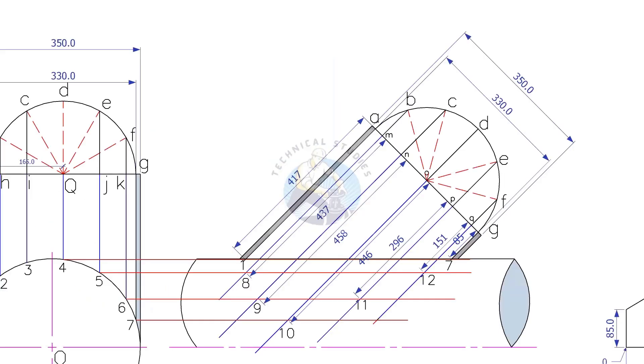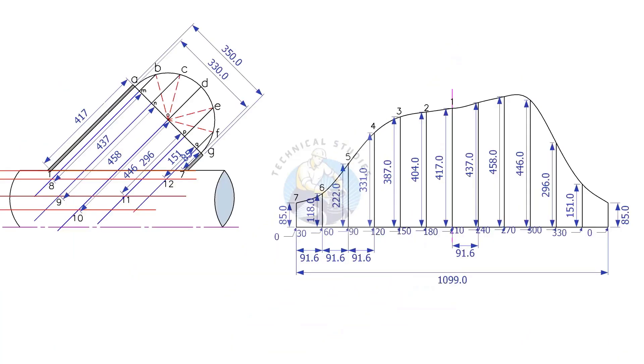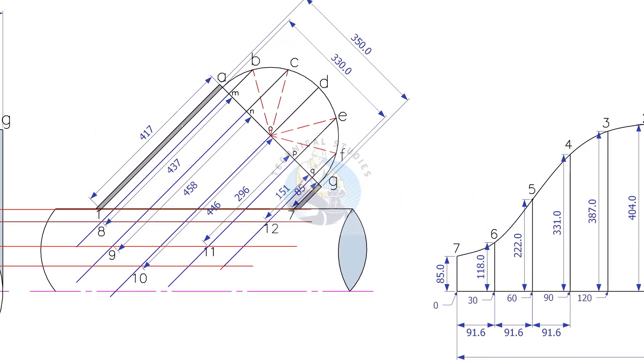As previously done, draw parallel lines from points 4, 5, 6 and 7 and intersect at points 1, 8, 9, 10, etc. as shown. Note down the measurements and draw vertical lines on the layout.